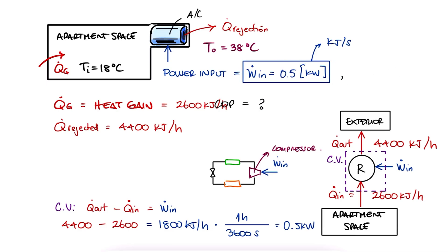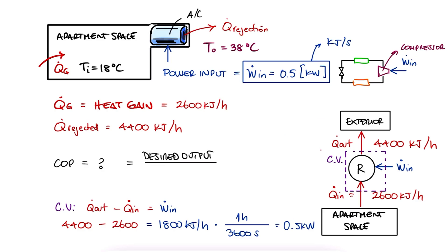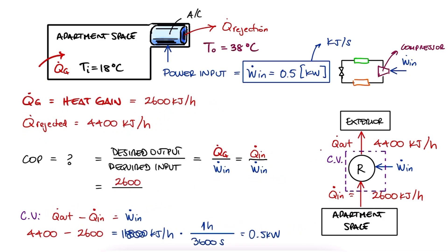As for the coefficient of performance, we know it must be equal to the desired output, meaning the heat that is being removed from the apartment or the heat coming in to the refrigeration cycle Q_in over the power input W_in. Substituting the values, we get 1.4 repeating. And that's it.